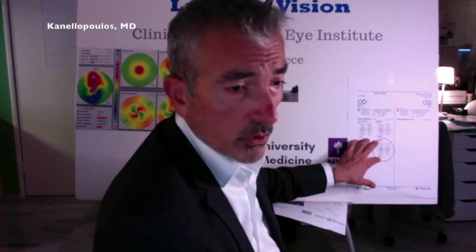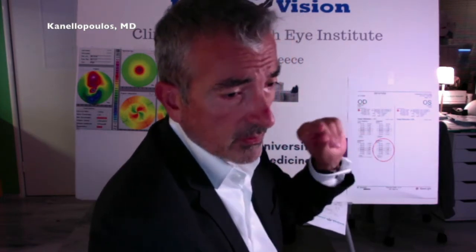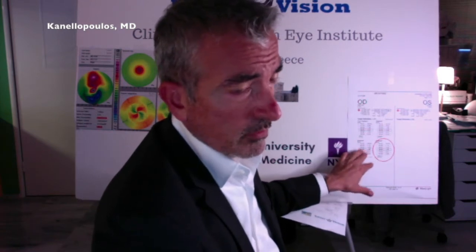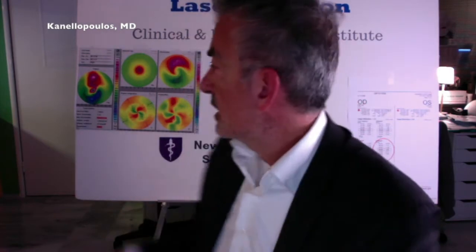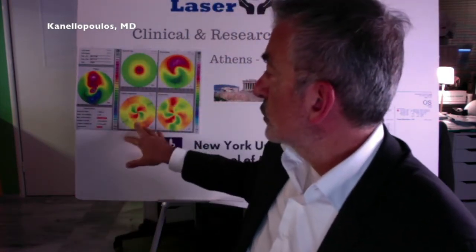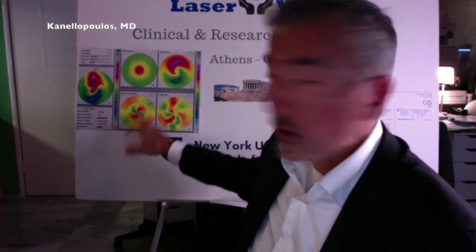We decided to go for the Hoffer Q formula here due to the fact that the anterior chamber is very shallow — that's our go-to formula with a shallow anterior chamber. And we analyze the irregular astigmatism with Fourier analysis in order to better isolate the regular part of the astigmatism of this patient. I will go in and narrate to you the actual calculations and the procedure itself, and thank you in advance for your attention to this very interesting case.